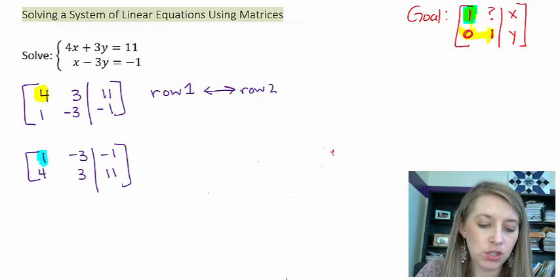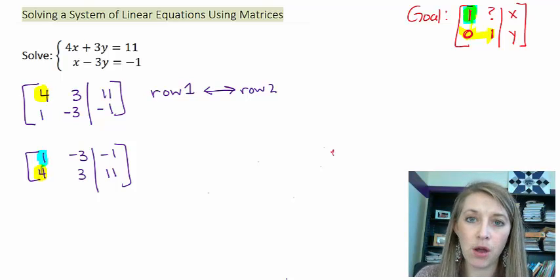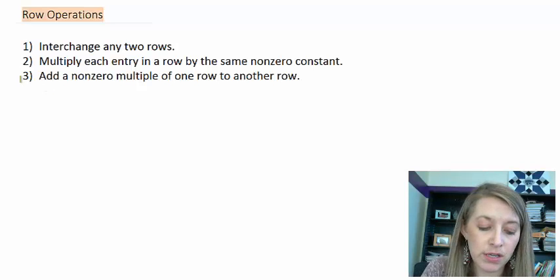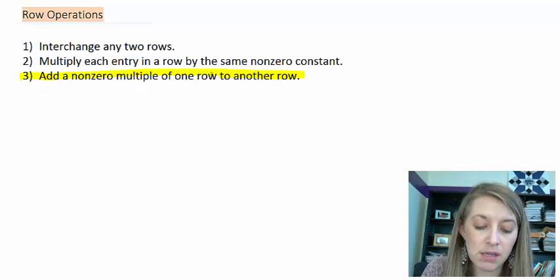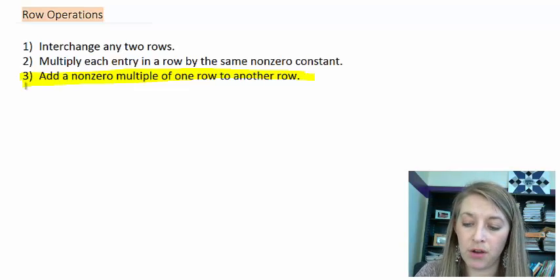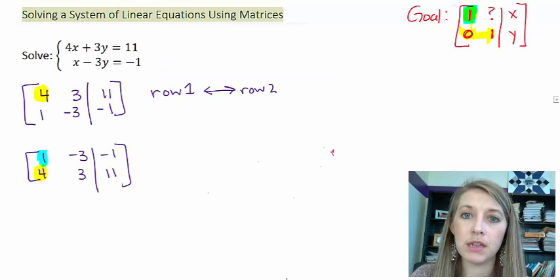The next step that I usually do is I try and usually get this 4 into a 0. Whenever I'm trying to eliminate something, just like we did in the elimination method, the easiest way I've found to do this is by using this method here. Add a multiple of one row to a different row. So let me talk about how we would actually do this in elimination method so you can see what we're doing here.